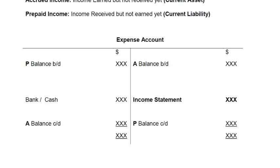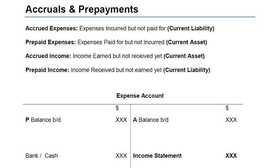Now let's move to the income account. The income account also contains accrued and prepayment. If you have a shop or apartment that you let on rent and someone hires that apartment, the rent they pay you is an expense for them. They make an expense account for rent, and you make an income account because the rent you receive every month is income for you. There can be two types: accrued income and prepaid income.